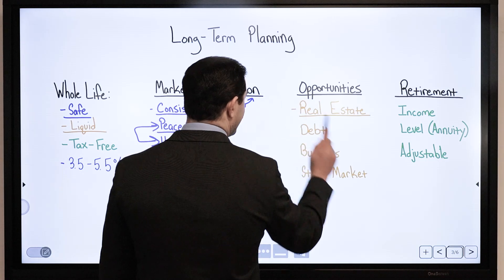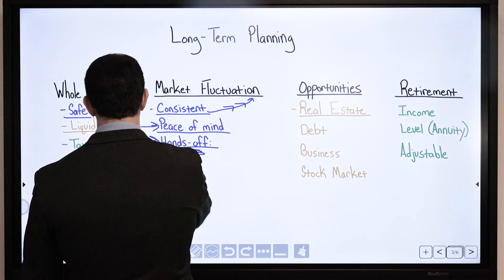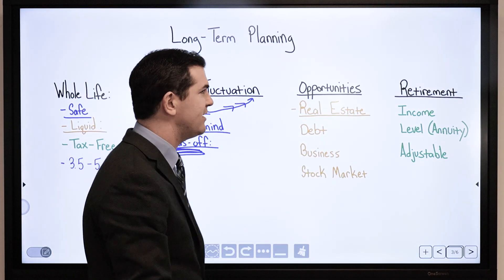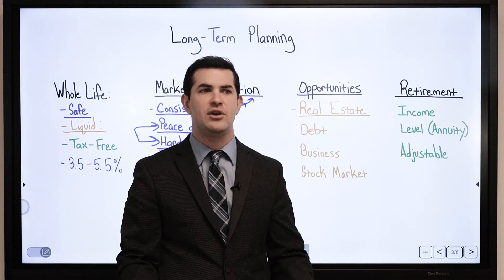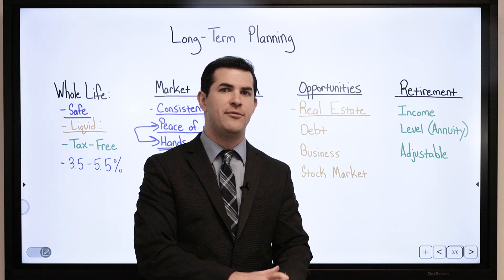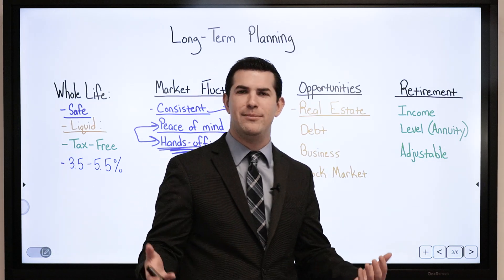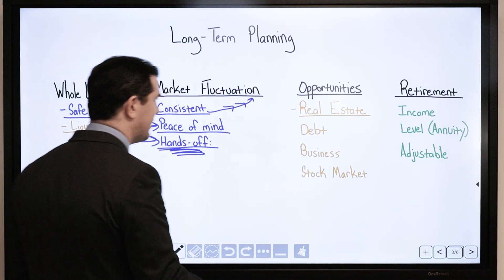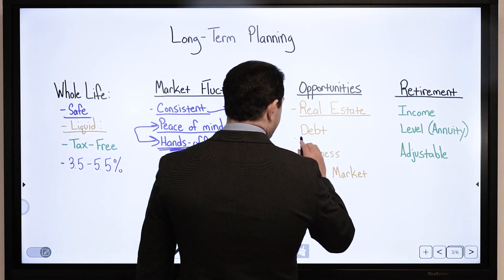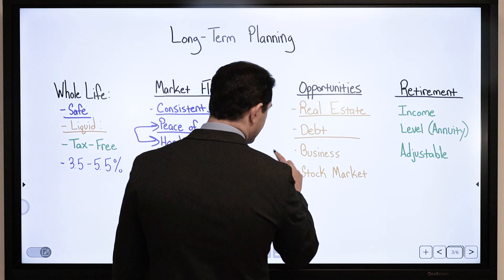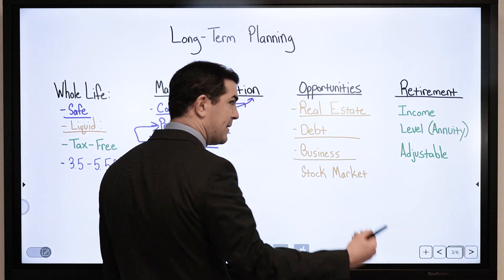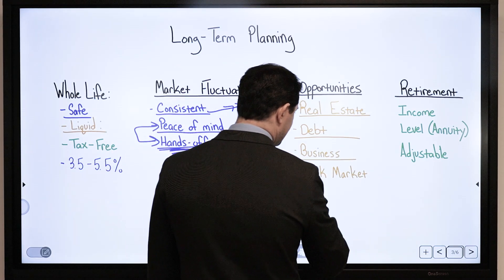With real estate, if an opportunity comes up, I can request a loan from my policy and receive it typically in 3 to 5 business days. Unless I made a deposit the day before, then I've got to typically wait 10 business days. Some other opportunities: paying off debt, investing in a business, perhaps your own business, or the stock market.